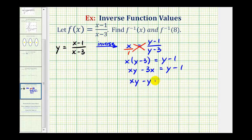Adding 3x to both sides gives us xy - y = 3x - 1.